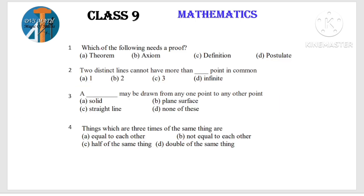First question: Which of the following needs a proof? The options are Axiom, Definition, Postulates, and Theorem. What needs proof? When you are proving the theorem, that is the proof. The answer is Theorem.